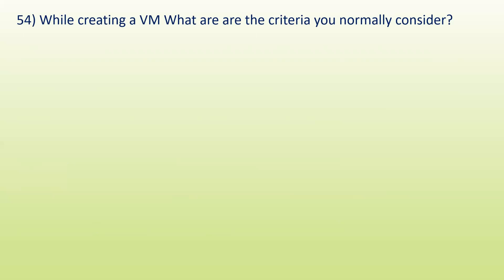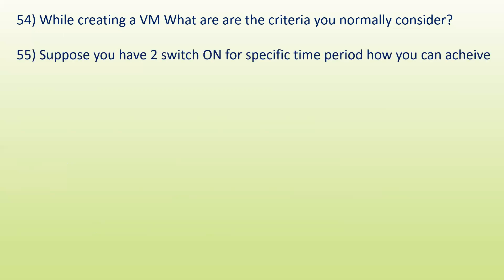Next: while creating a virtual machine, what criteria do you normally consider? You consider the location, resource group, subscription, public IP or private IP, virtual networks, and other different types of criteria. Next: suppose you have to switch on a VM for a specific time period — how can you achieve that? This is an automation related question about scheduling VM start and stop.